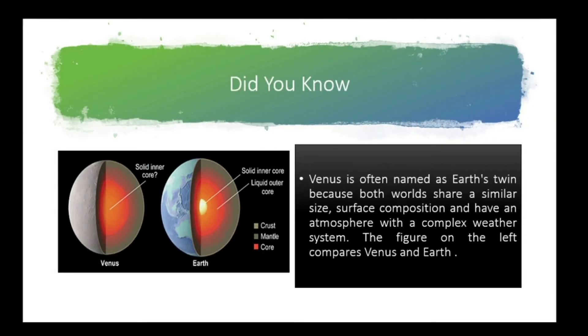Students, did you know that Venus is often named as Earth's twin? Because both worlds share a similar size, surface composition, and have an atmosphere with a complex weather system. The figure on the left compares Venus and Earth.